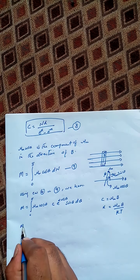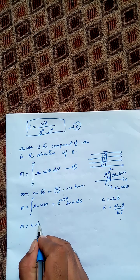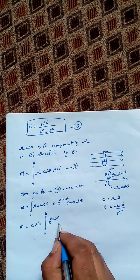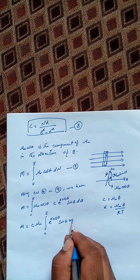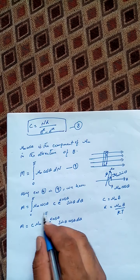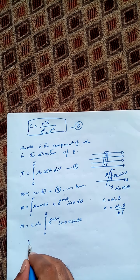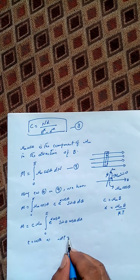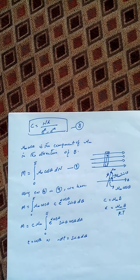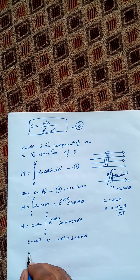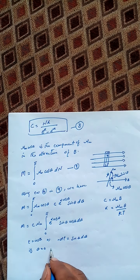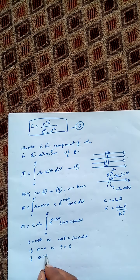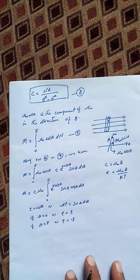Since C and μM are constants we keep them outside the integral, giving the integral from 0 to π of e raised to the power α cosθ times sinθ cosθ dθ. To solve this integral, we use the substitution t equals cosθ, so minus dt equals sinθ dθ. When θ equals 0, t equals 1; when θ equals π, t equals minus 1.